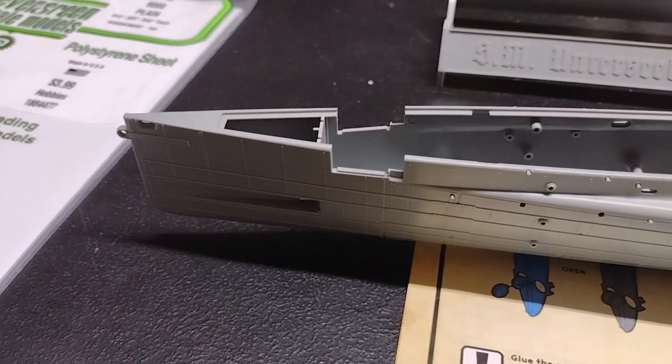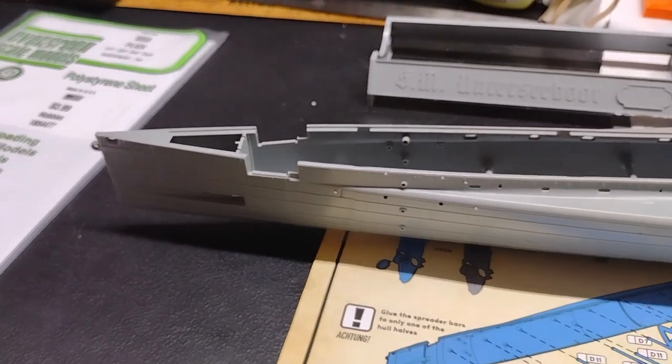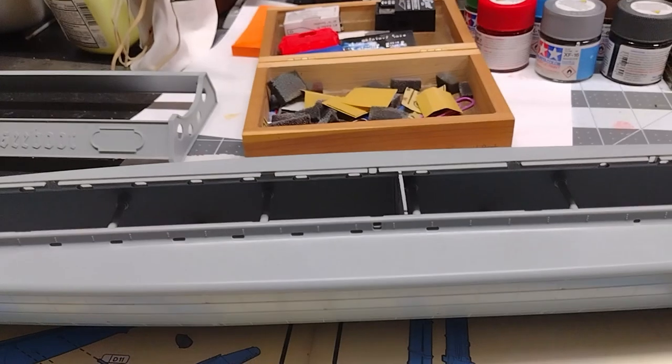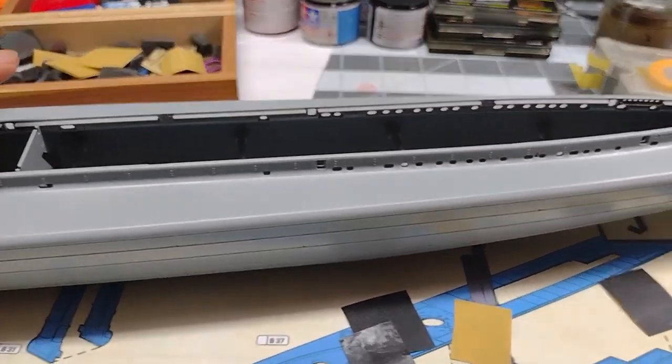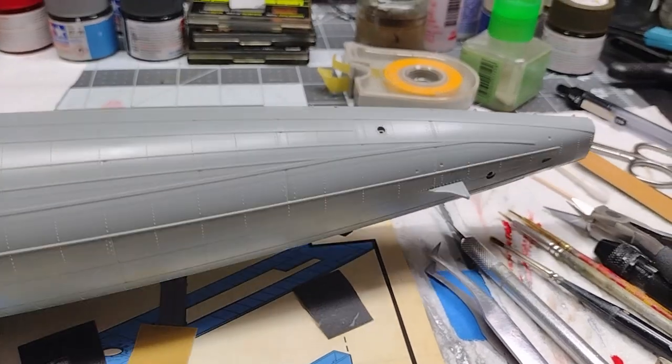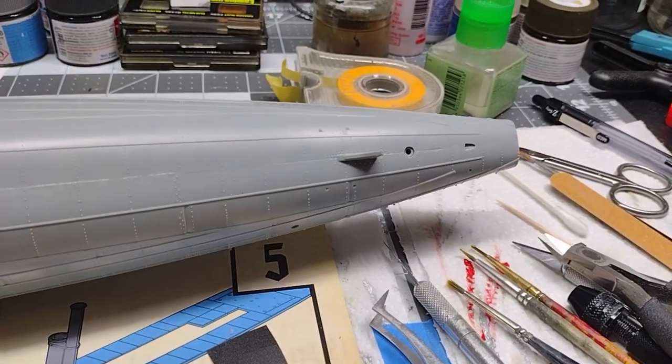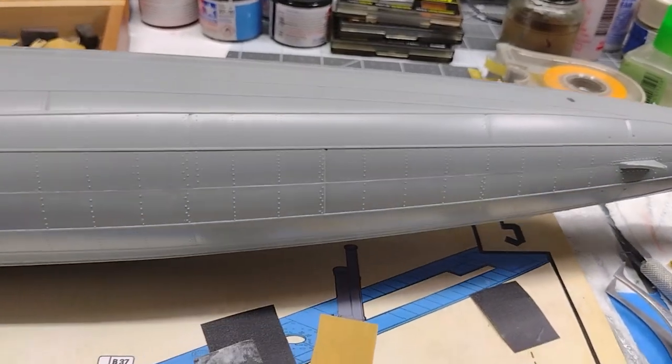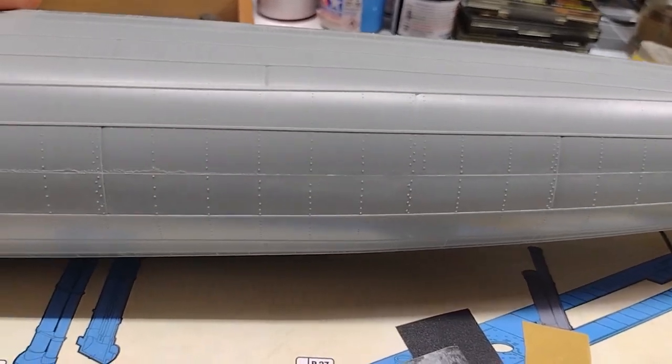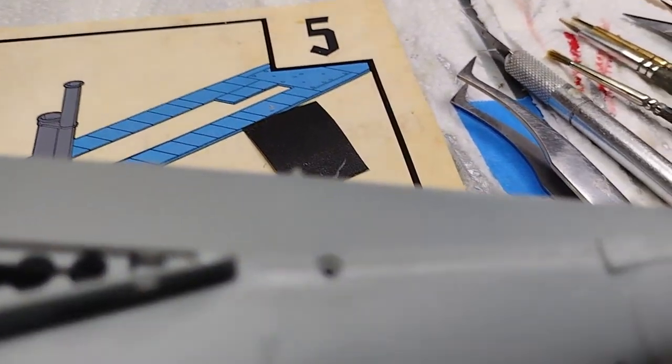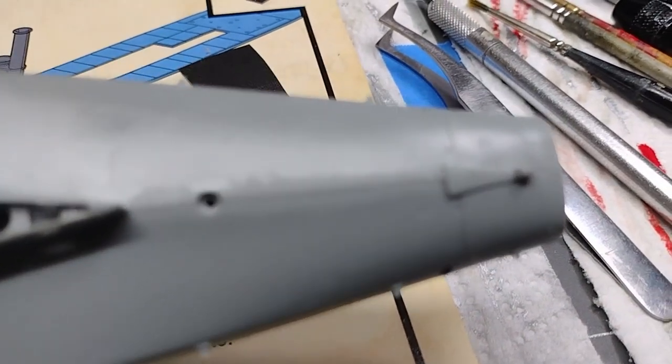This is part two where I'm continuing work on the submarine. I have the two halves of the hull together as we saw in part one, and I have now glued it all together. There's a bit of a seam that I have to sand down as you can see right here and on top.